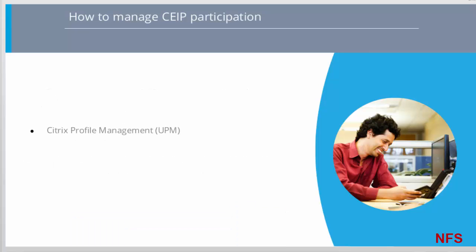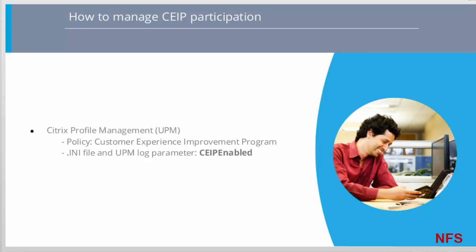Managing CEIP participation for profile management is done through an Active Directory GPO setting, Citrix HD policy, or a UPM INI file. The policy name is Customer Experience Improvement Program, and in UPM logs, the current status will be shown with the CEIP enabled parameter.